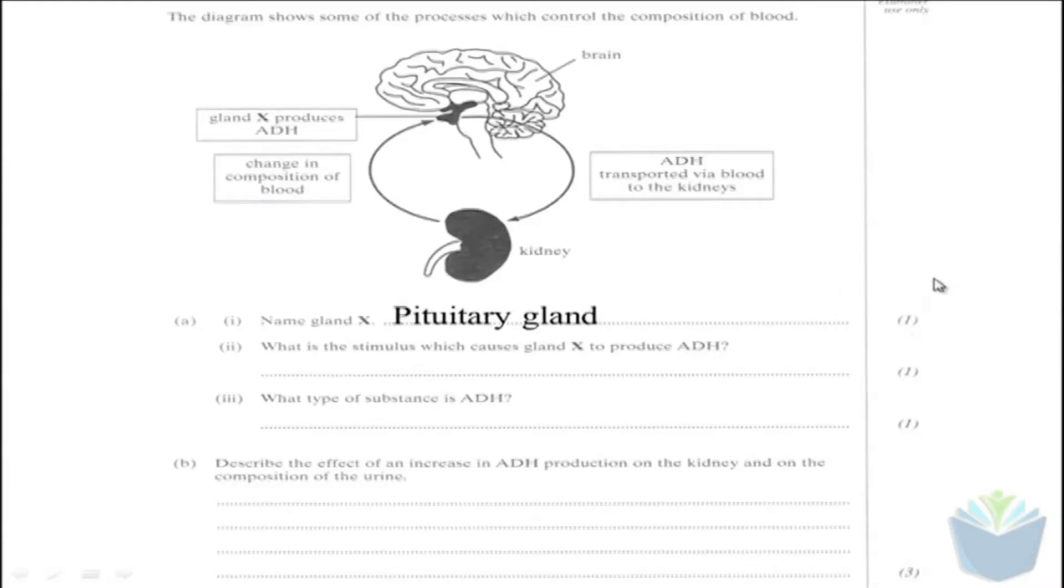And the stimulus that causes Gland X to produce ADH is low water content. So you have receptors within the nephrons of the kidneys which actually detect blood composition, basically how much water is in the blood. Now, ADH stands for antidiuretic hormone. So it's obviously going to be a hormone, that's the type of substance ADH is.